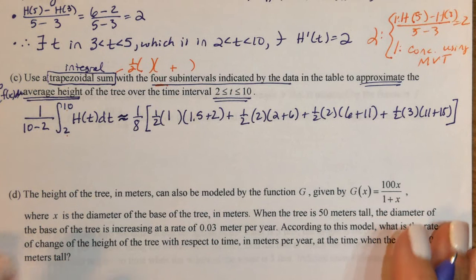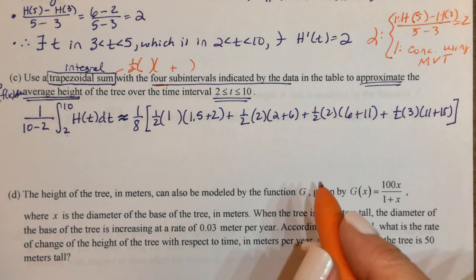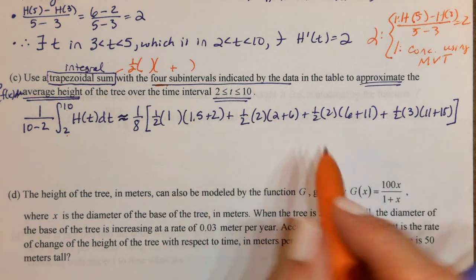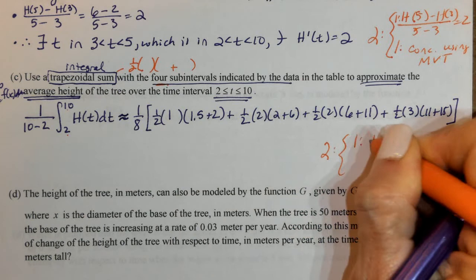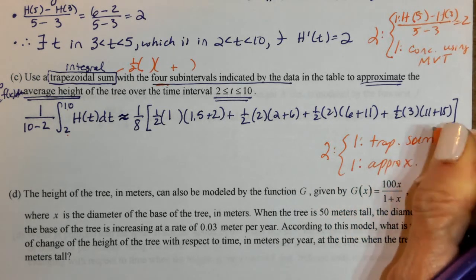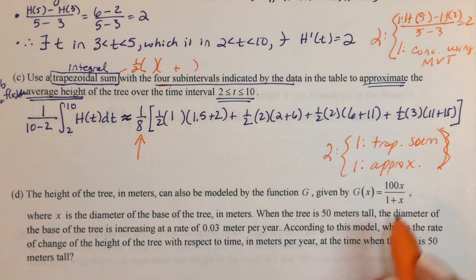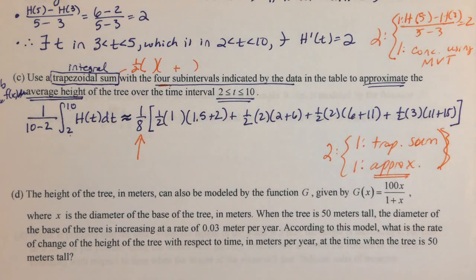They did not ask for units. This was worth 2 points: one for the trapezoidal sum, one for the approximation. Do not forget that 1/8 out front — without it you're not getting the average height of the tree, you're getting something else. That 1/8 is part of the approximation point.